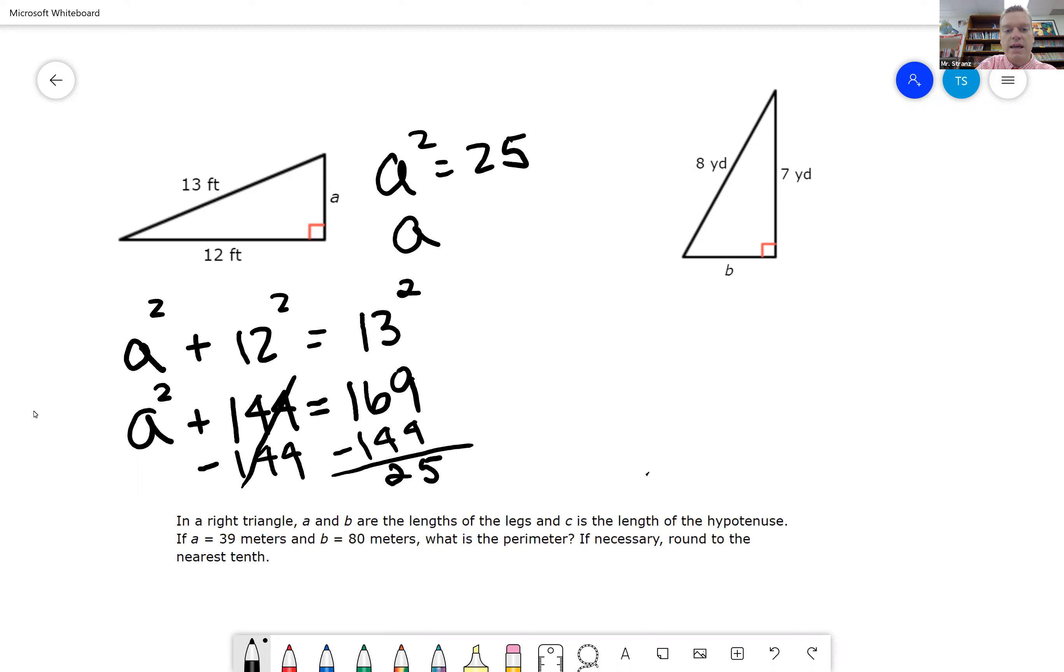Which means A, which is the square root of 25, is going to be 5. So we know A equals 5.